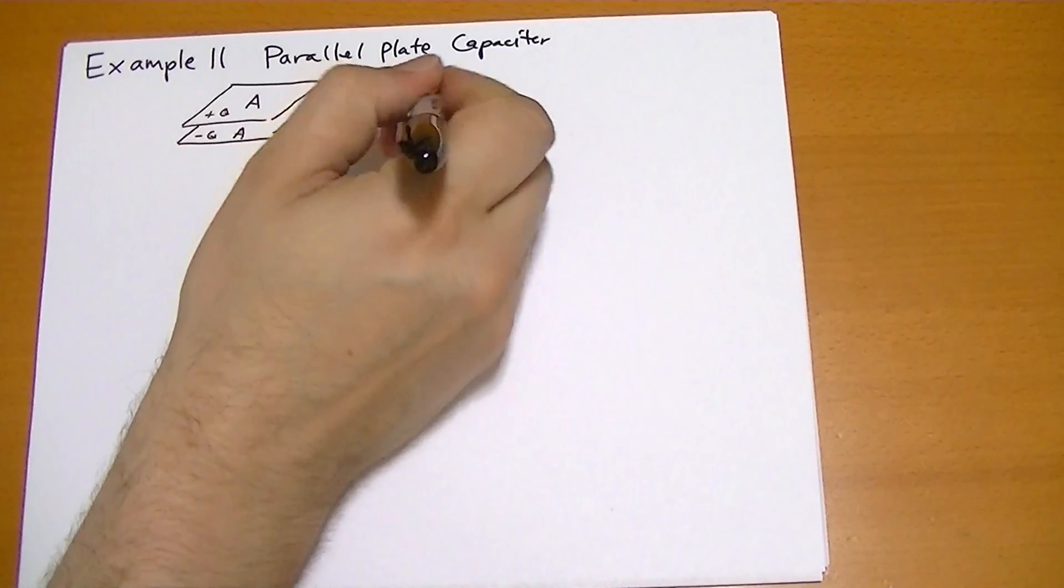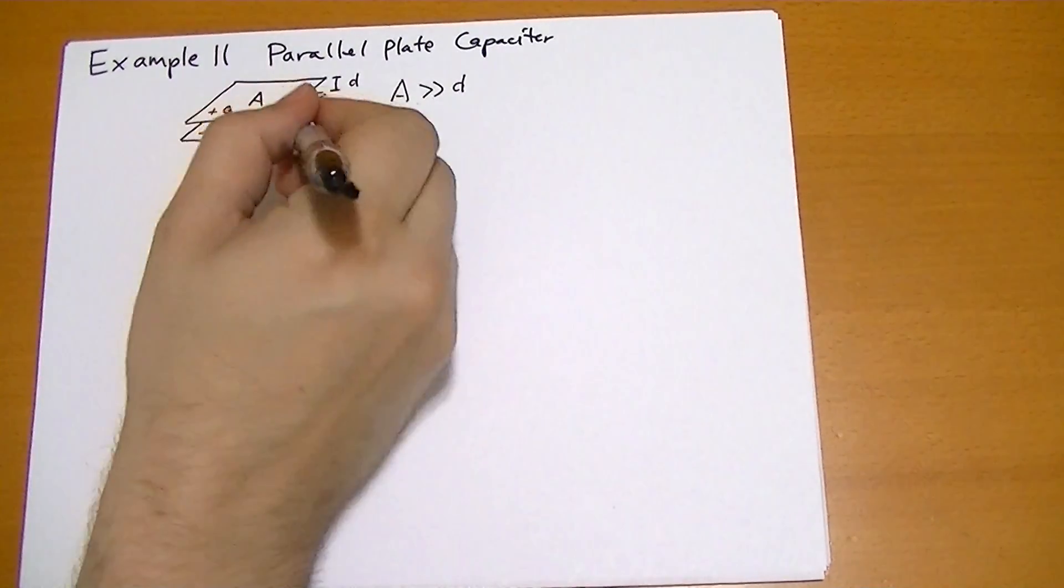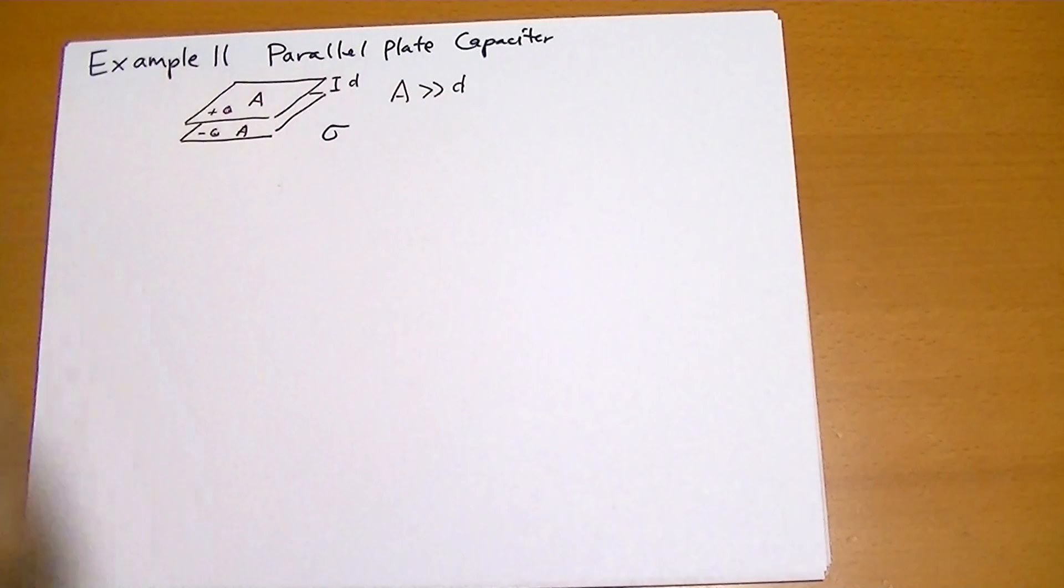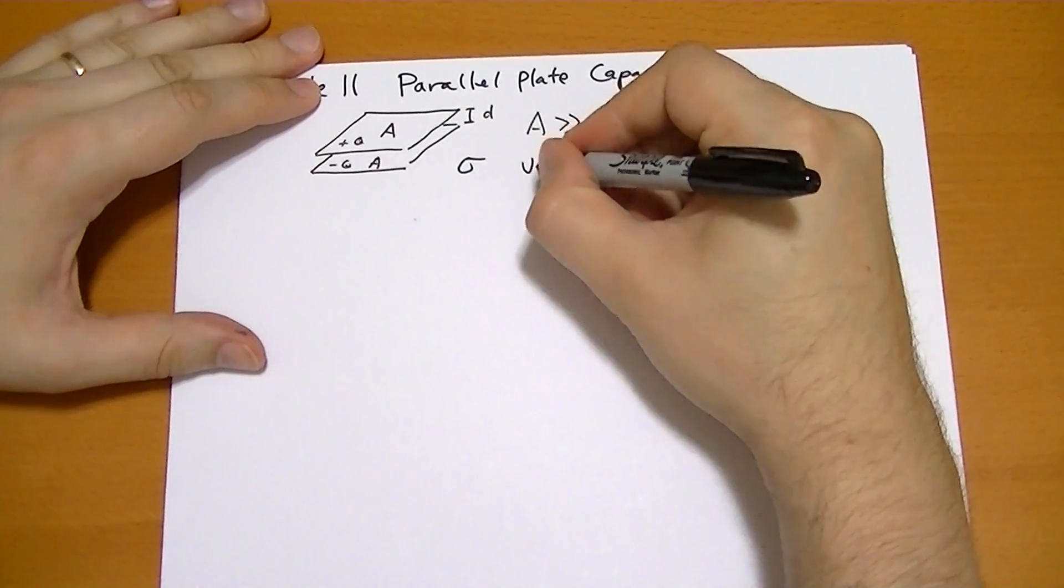So because they're very close to each other, sigma is going to be very constant. And I say very constant because around the edges it's going to be a little funky, but for the most part, it's constant enough.